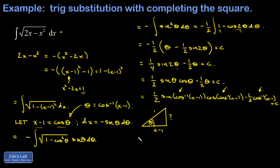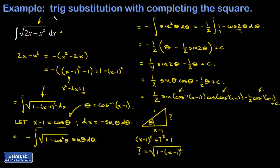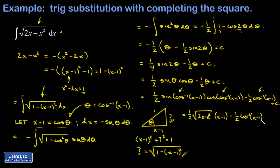The non-trivial piece is the sine of the angle whose cosine is x minus 1. We use a geometric construction: theta is the angle whose cosine is x minus 1, so the adjacent side is x minus 1 and the hypotenuse is 1. Applying the Pythagorean theorem, the missing side is the square root of 1 minus the quantity x minus 1 squared, which is the same as the square root of 2x minus x squared. So the sine of that angle is the opposite over the hypotenuse, giving the square root of 2x minus x squared. The final answer is one half times the square root of 2x minus x squared times x minus 1, minus one half inverse cosine of x minus 1, plus C.